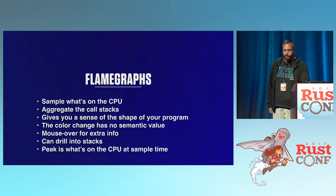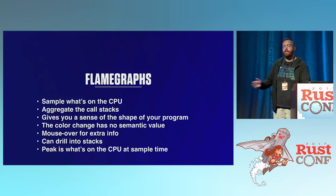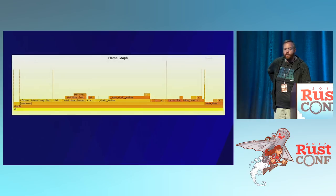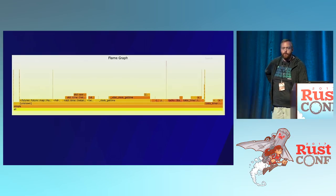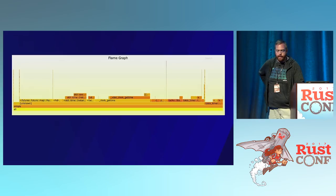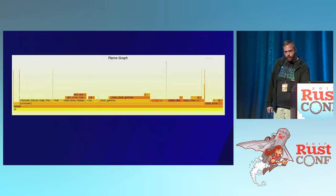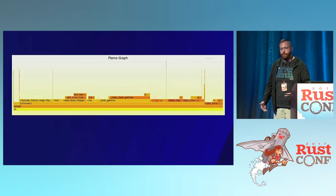A flame graph takes the samples from a sampling profiler, aggregates them, and gives you a sense of the shape of your program. Here is what one looks like for our single-threaded program. Let's say it's 1,000 samples aggregated — the width of what's on top is the function running when the sample was taken, and what's below gives you a sense of how often that was seen. Here we can see we get a clock, get the time, make an instant, and call map on a future.